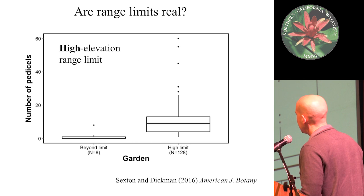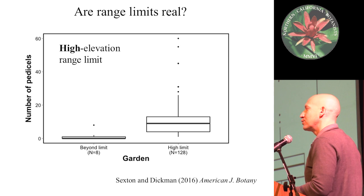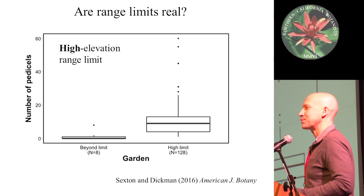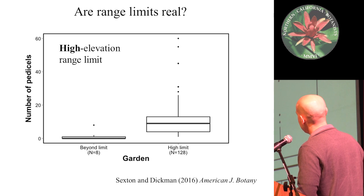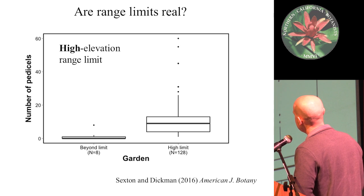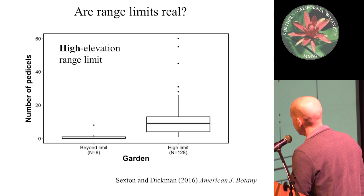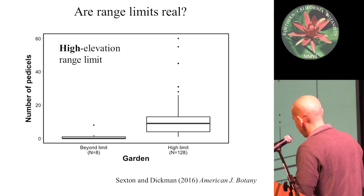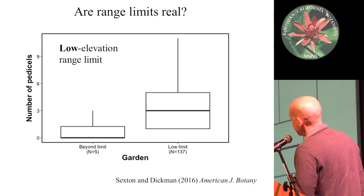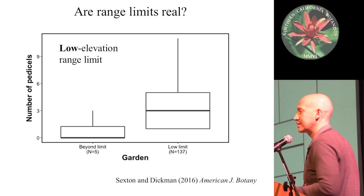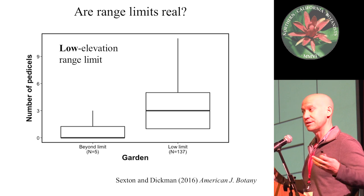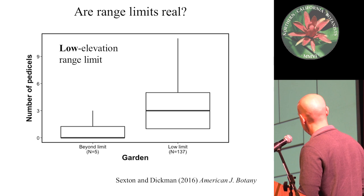Sometimes the question arises: are range limits real? One way to answer that is to transplant plants beyond the range limit and see what happens. When we transplanted some populations beyond the high elevation range limit and at the high elevation range limit, we saw how many flowers they could produce. We sowed about 6,000 seeds, got about eight plants to show up, and nearly all of them could not produce flowers. So it seems to be a real high elevation limit. If we contrast this to the low elevation area of the species range, we see a very similar pattern. There does seem to be some very strong selection going on just beyond the geographic range limits.